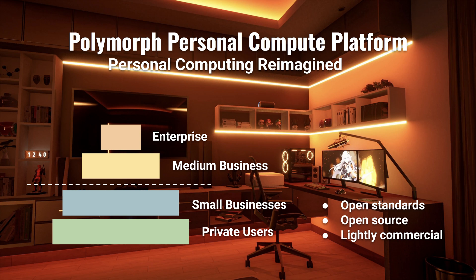The target audience for the Polymorph Personal Compute Platform are private users and possibly small businesses with around 1 to 25 employees or so. Because Polymorph targets users with more limited finances, most of the technologies developed during the project will be open standards or open software. There might be some lightly commercial managed services later on, but they will be made affordable. Polymorph might be useful for medium-sized businesses and enterprises too, but these are not in the core target audience, as these companies typically have other requirements that Polymorph will not be addressing, at least not in the beginning. Some of the technologies from the Polymorph project might still be useful outside of the Polymorph project for medium to large-sized businesses, but that is not the main goal or the main target audience.